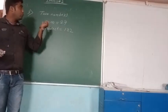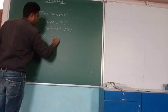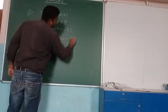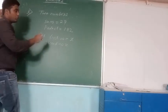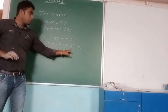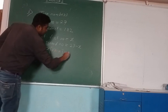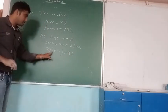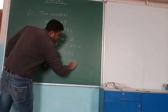Two numbers are there. Let the first number equal x. Obviously the second number will be 27 minus x, since they gave the sum as 27. Then we take the product: x multiplied by (27 minus x) equals 180. Expanding: 27x minus x squared equals 180, which gives minus x squared plus 27x minus 180 equals 0.